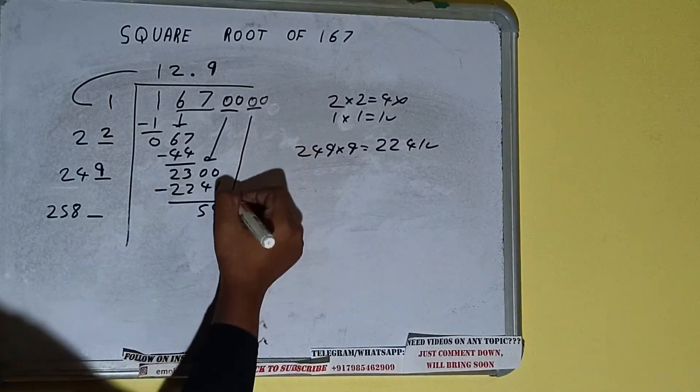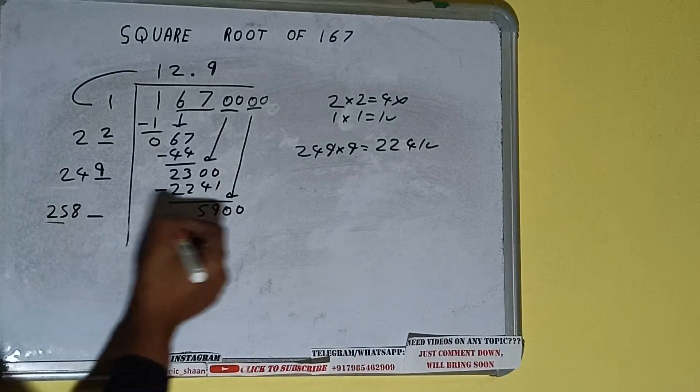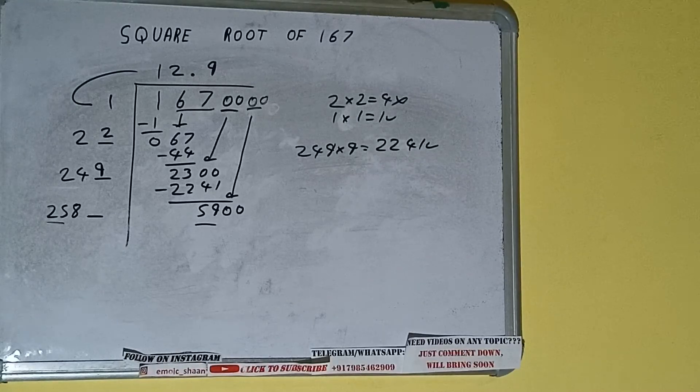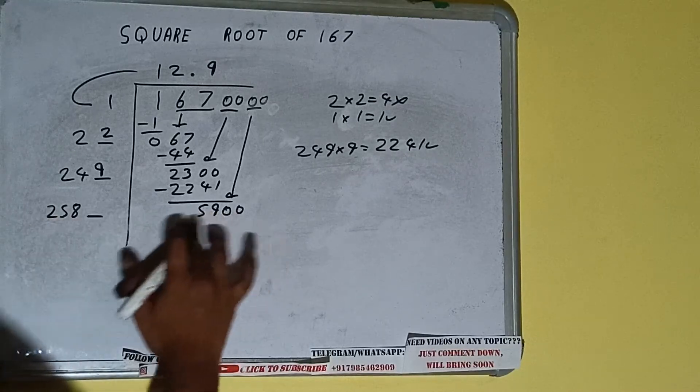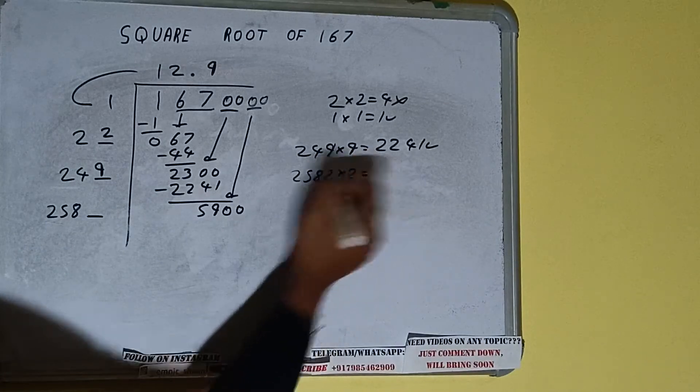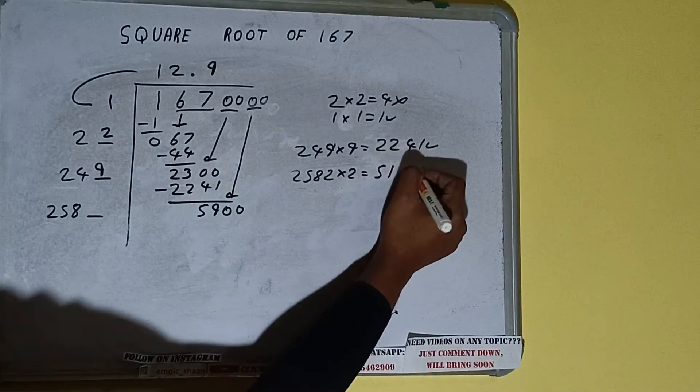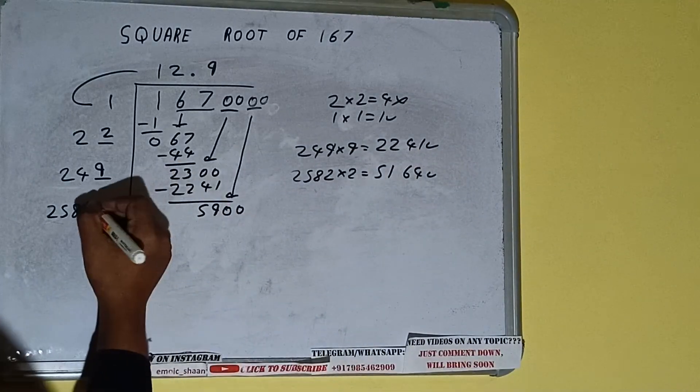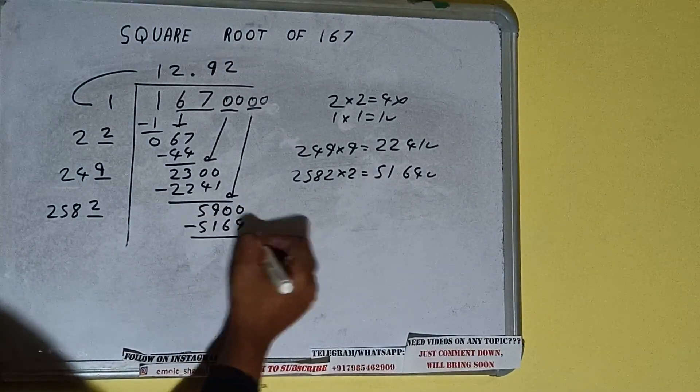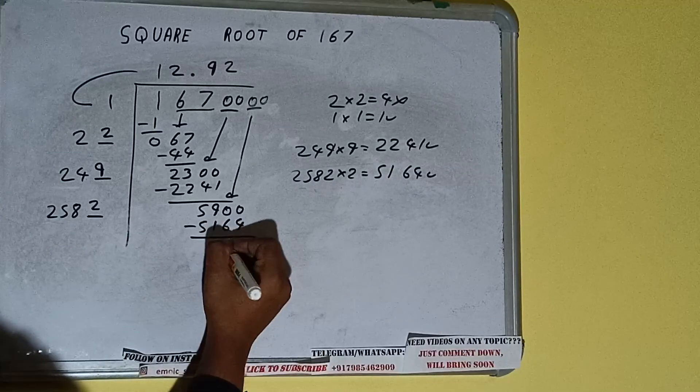So bring the next pair of zeros down and it will be 5900. Now compare this 25 with this 59. So we can try 2 times. 2582 into 2 we can try. And we'll be having 5164 which is good to take. So 2 here and 2 here. 5164 subtract. And we'll be left with 736.